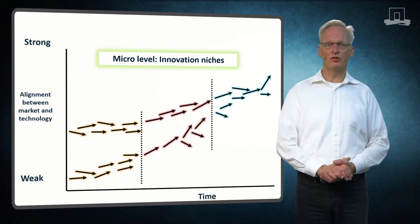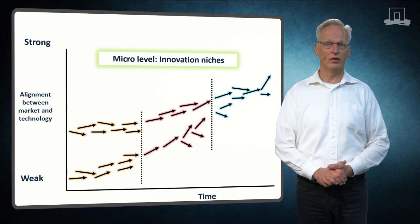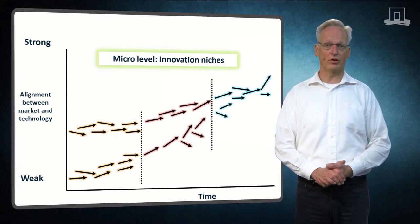This figure presents the three-stage process of niche development. One distinguishes between the R&D niche, the technological niche, and market niche.